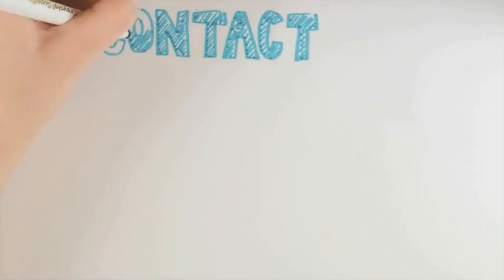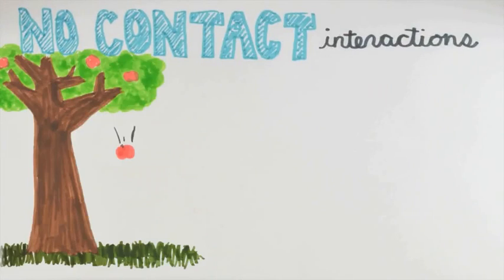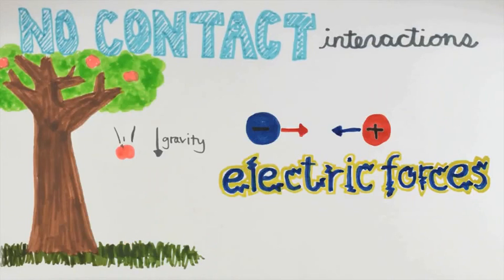Now, not all interactions require contact. Newton's universal law of gravitation and Coulomb's law for electric forces are two examples where we can have interactions at a distance without physical contact between the system and the surroundings.